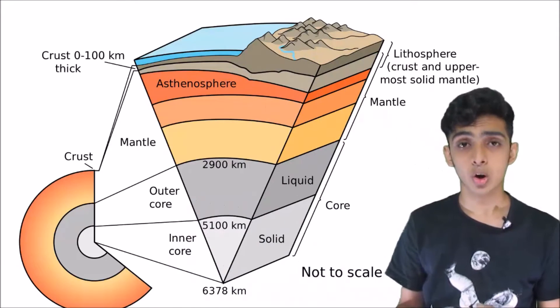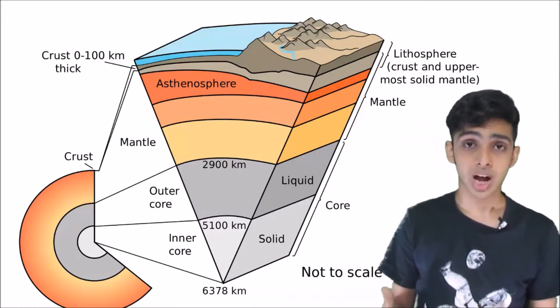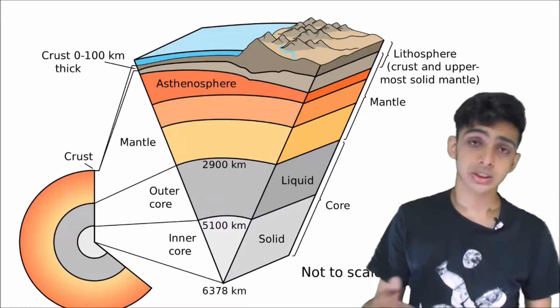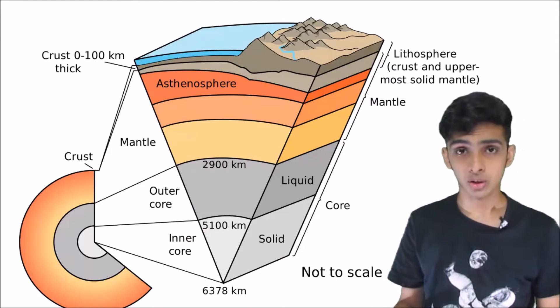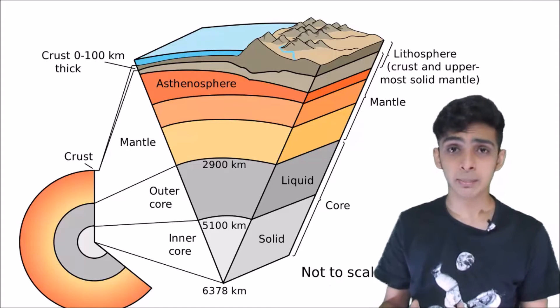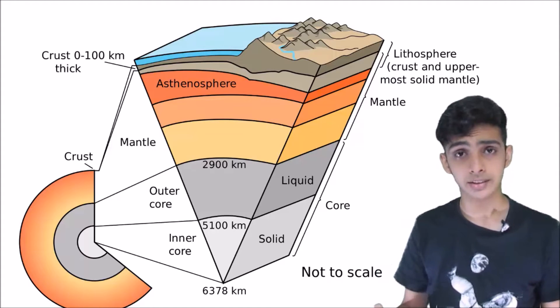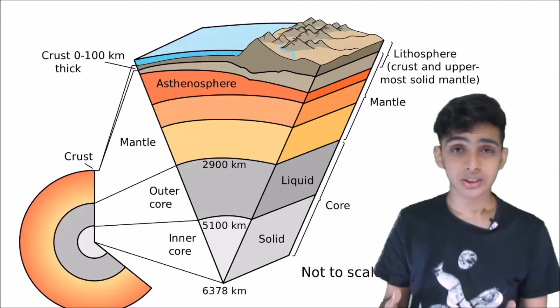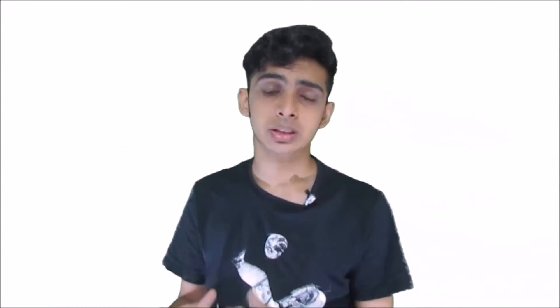The inner core of earth is solid because of the high pressures down there, but the outer core of earth is in a liquid state. This core is mainly composed of iron and small percentages of lighter elements, and it's in constant motion due to the earth's rotation and convection.